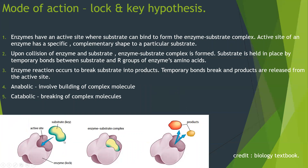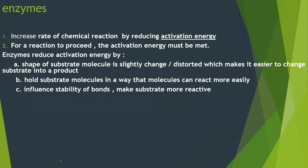In lock and key, the active site and substrate shape are exactly complementary and bind directly. Enzymes increase the rate of a chemical reaction by reducing activation energy — the amount of energy required for the reaction to take place. The shape of the substrate molecule is slightly distorted, making it easier to convert to a product, either by holding substrate molecules so they can react more easily or by influencing bond stability to make substrates more reactive.